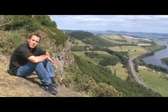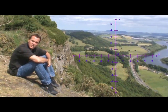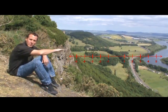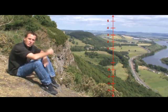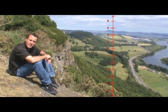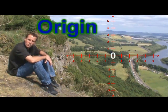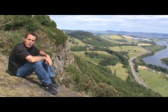We've talked about the coordinate system — there's an x-axis and a y-axis. The x-axis goes horizontal and the y-axis goes vertical. Where they meet, it's called the origin. At that point, x and y both equal zero. It's the starting point.